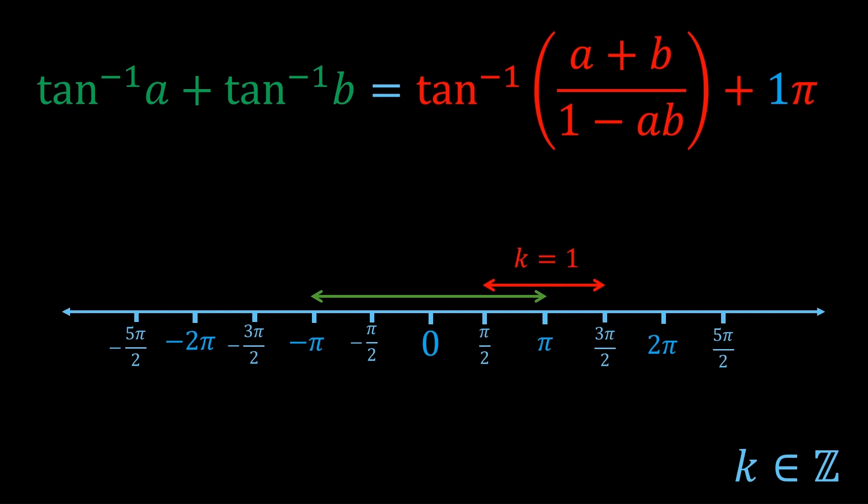However, if we take k equals 2, which would move it right by π again, you see that there's no longer any overlap. It's impossible for these two equations to be equal if we take k equals 2.